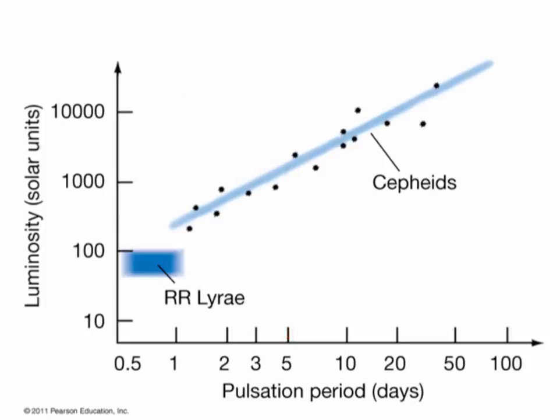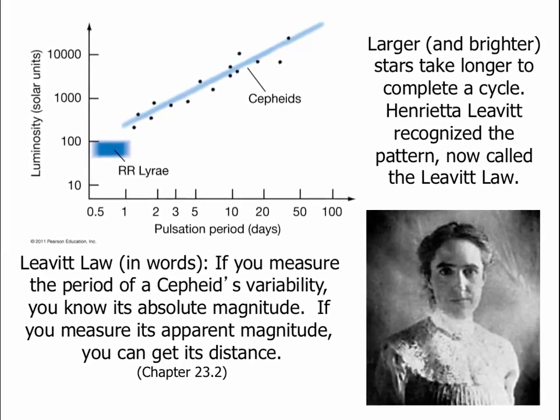Now if we know how luminous the star is, and we can tell how bright it appears in our sky, we can determine the distance. Because how bright something appears depends on both how luminous it is and how far away it is. If we know how bright it appears and how luminous it is, we can determine how far away it is. So these Cepheid variable stars are extremely important for finding distances to other objects if we can find a Cepheid star in that object. In summary: if you measure the period of the Cepheid's variability, we know its absolute magnitude or its luminosity. And if we can measure its apparent magnitude — which of course we can do, that's just how bright it appears — we can use the absolute magnitude and the apparent magnitude to get the distance to the star.